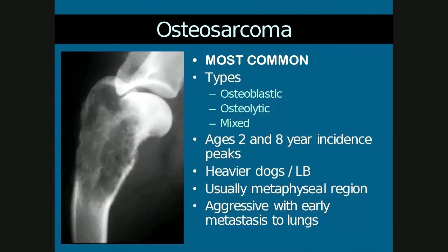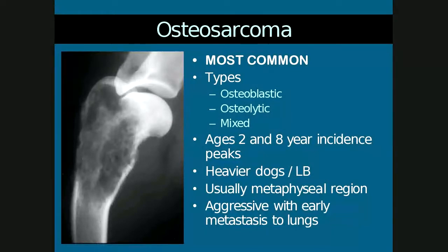We immediately kick off with the section on malignant bone neoplasms and osteosarcoma is the most common one. About 85% of bone tumors seen in large breed dogs are osteosarcomas and they may be osteoblastic, forming a lot of new bone, osteolytic which are predominantly lytic, or mixed which means there is new bone as well as lysis. There's a bimodal peak: dogs at two years and at eight years are most commonly affected, as are heavier or large breeds.